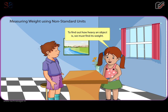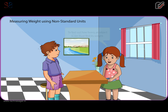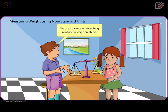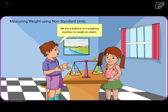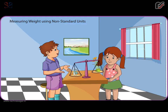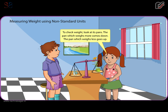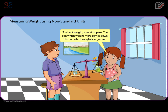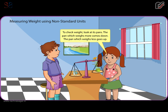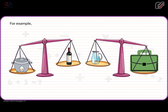To find how heavy an object is, we must find its weight. We use a balance or weighing machine to weigh an object. To check weight, look at its pans. For example, the rice cooker is heavier than the bottle. The jug is lighter than the briefcase.